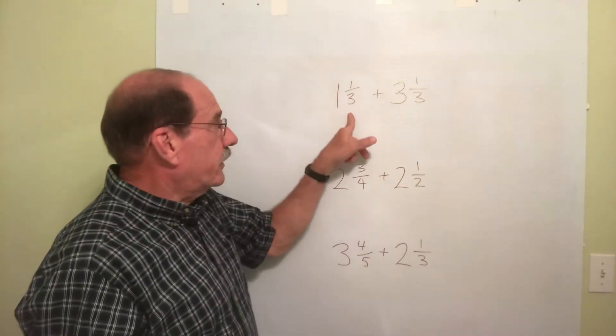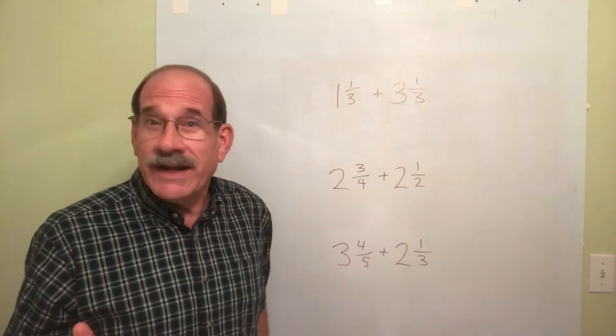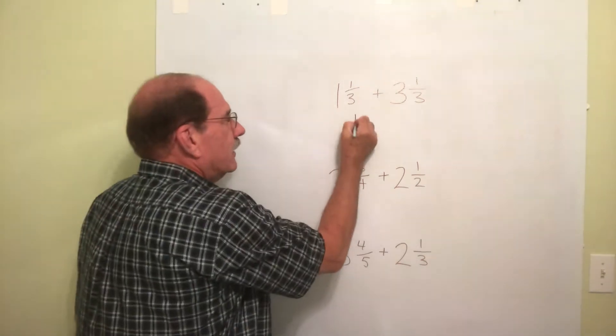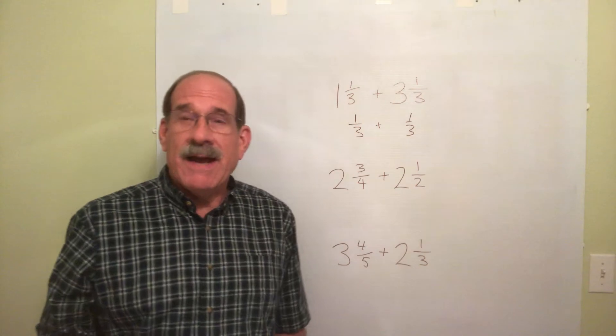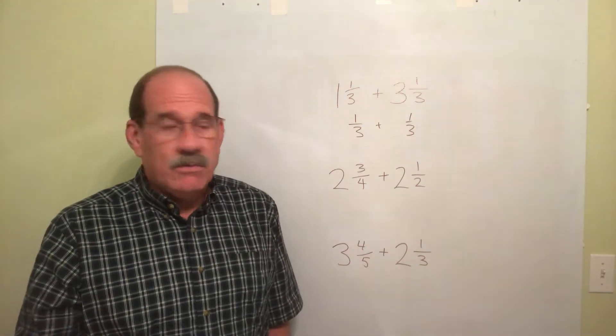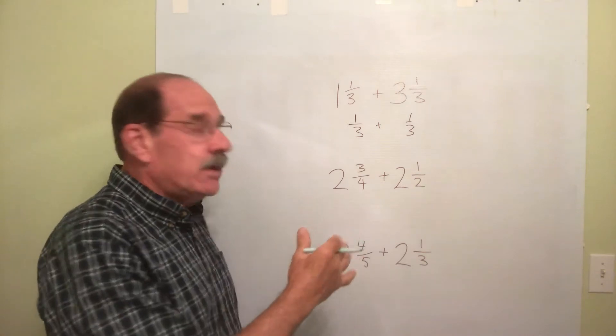Well, if all we're doing is 1 third plus 1 third, so we can rewrite this. Let's do 1 third plus 1 third. Well, since we have a common denominator, just like always, we can add. Add the two top numbers. 1 plus 1 is 2.